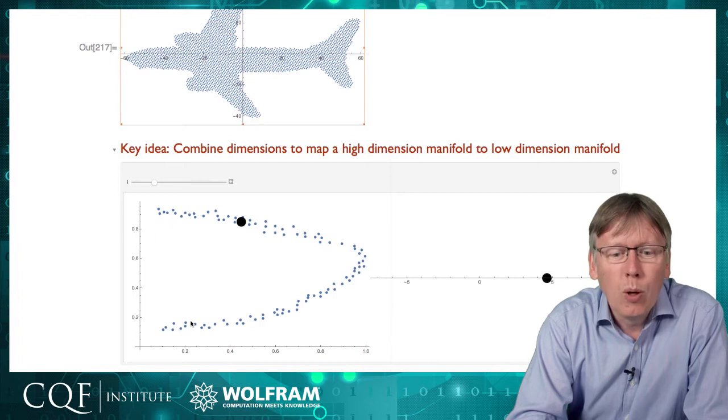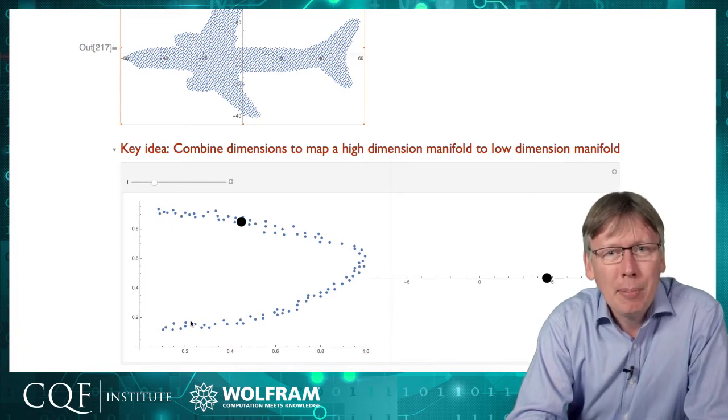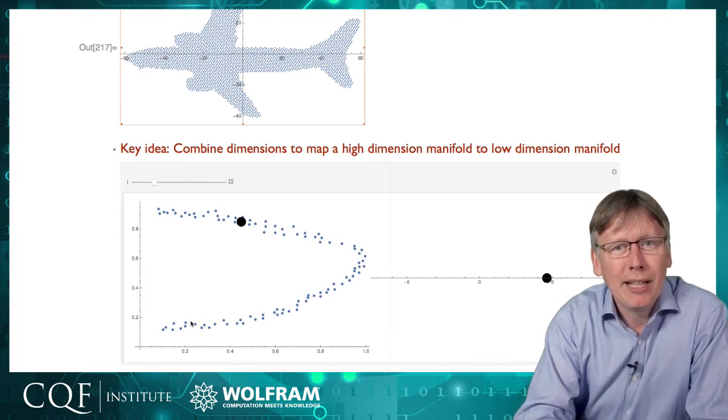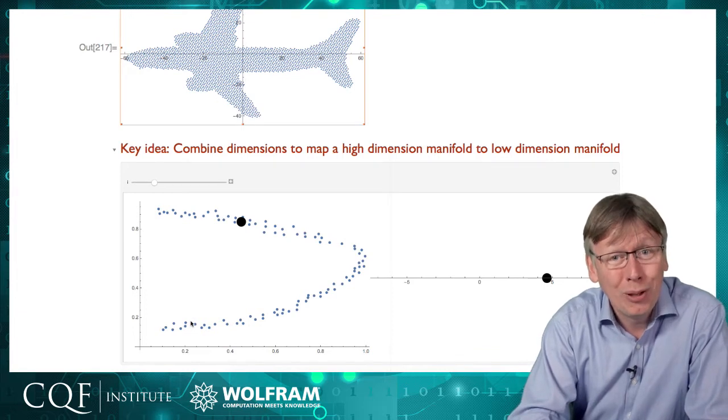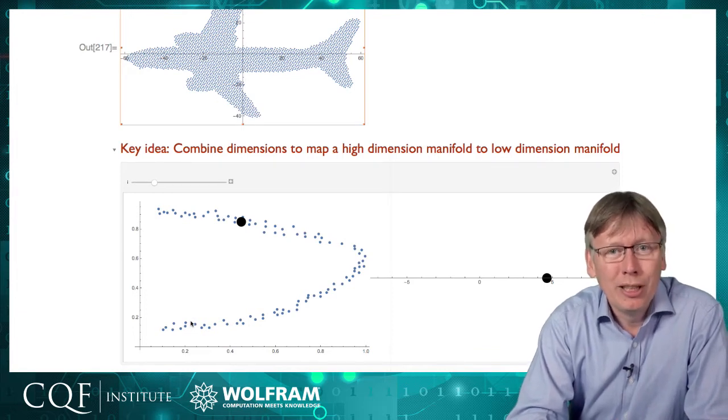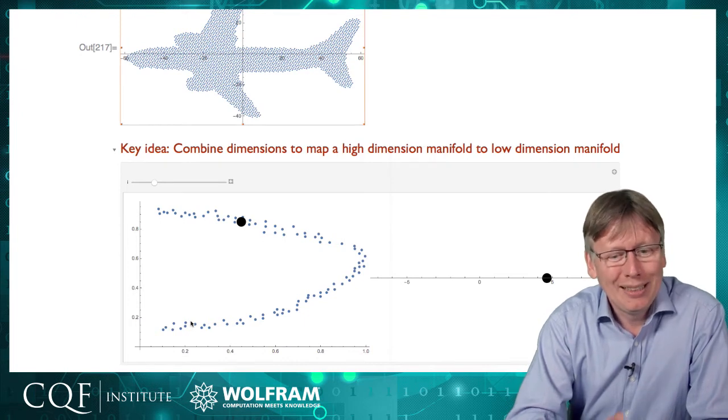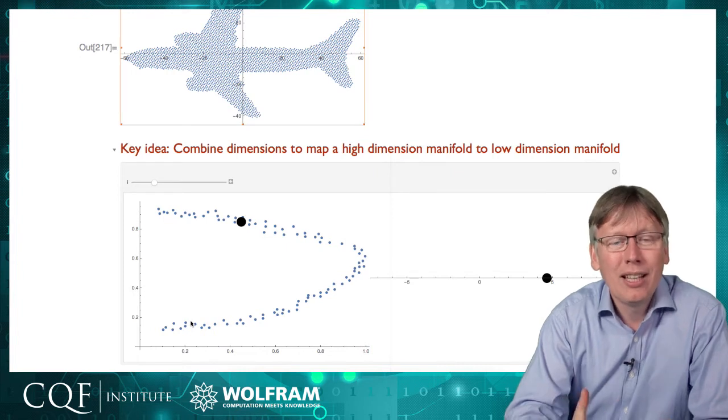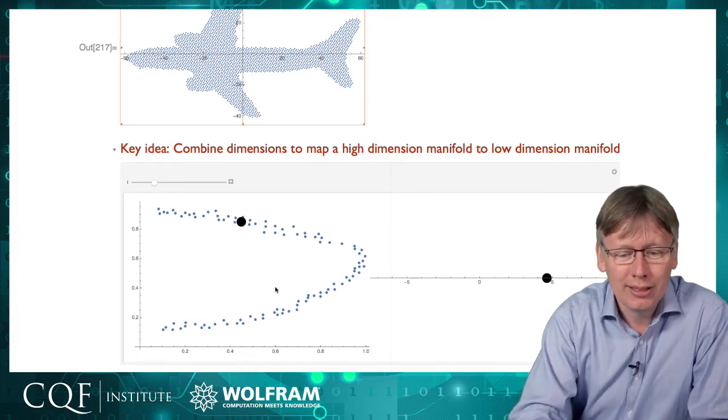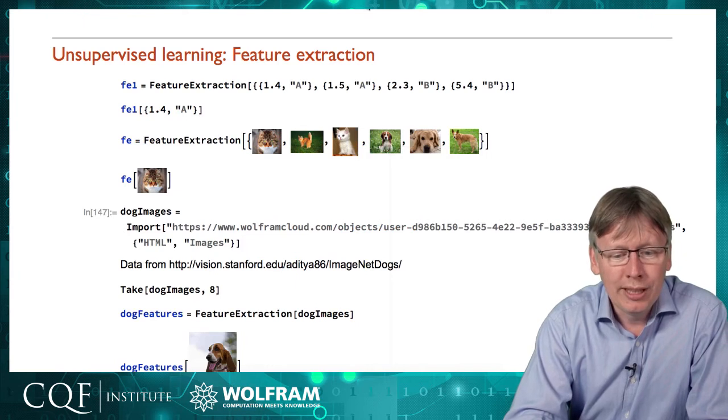To put it in a more mathematical way, what we're trying to produce is a mapping from m-dimensional space to an n-dimensional manifold, which preserves the most information, where hopefully n is a lot smaller than m. But we don't have to worry about that maths in much detail, because again, we have tools to automate this process. Let's look at those in a bit more detail.